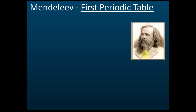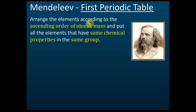After Mendeleev, he combined all the knowledge of previous scientists along with his own findings and developed the first periodic table. Before this, scientists observed the periodic change in chemical and physical properties of elements, but Mendeleev developed the first periodic table. He arranged the elements according to ascending orders of atomic mass.